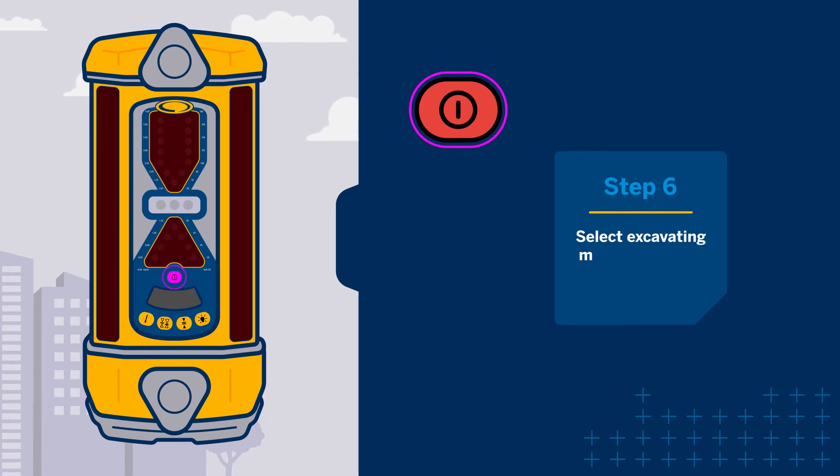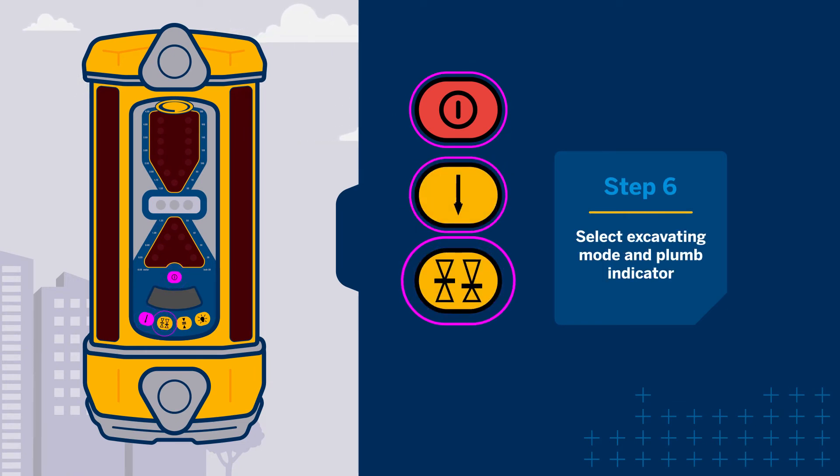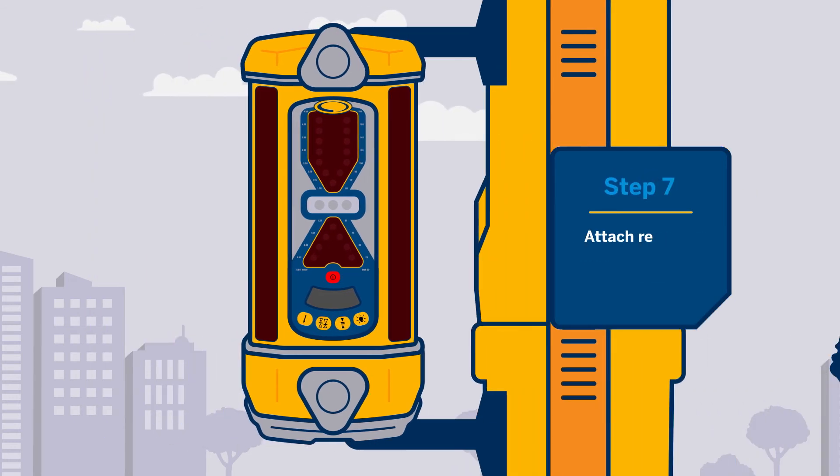Turn on the receiver and select standard plumb mode, center on-grade, and the smallest deadband. Mount the receiver to the magnetic mount.